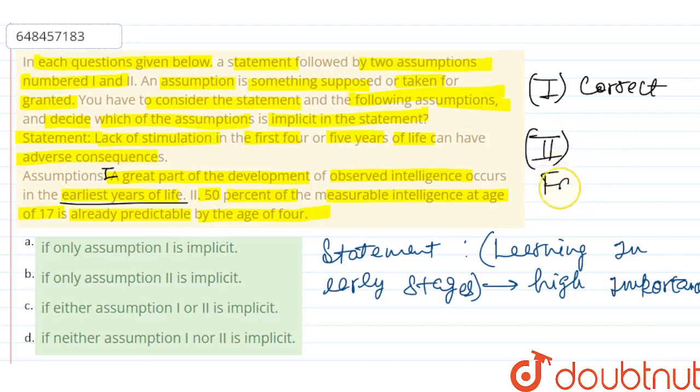So this fact might be right or this fact might be wrong as well. There is a possibility that this fact may be wrong. So we can say that this assumption 2 is not definitely correct. So definitely only assumption 1 is implicit.